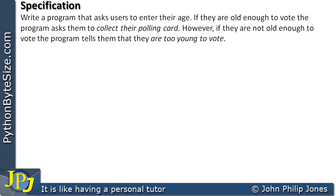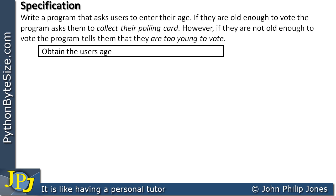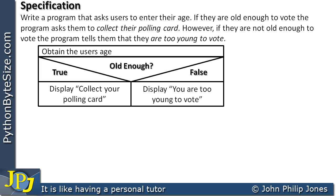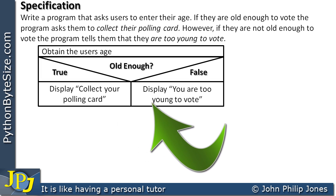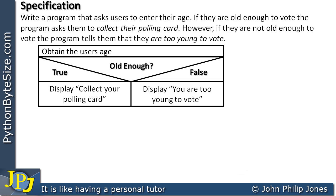We now need to decide what the solution is, and I'm going to represent a solution using a Nassi-Schneiderman chart. Here's the first step: obtain the user's age. We then choose a selection construct, because it will allow us to choose two routes through the program — one where we tell them to collect their polling card, and the other where we tell them they are too young to vote. Here you can see the Nassi-Schneiderman shape for the if-else selection construct.